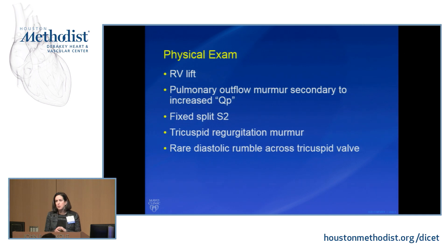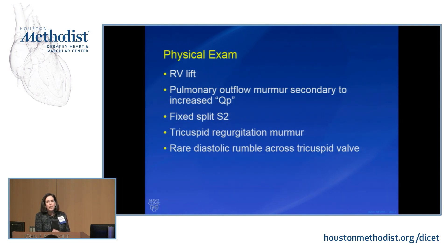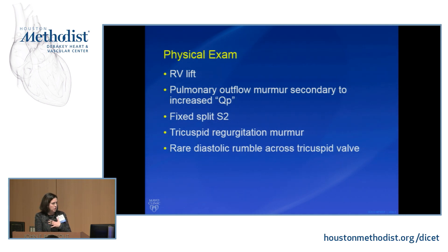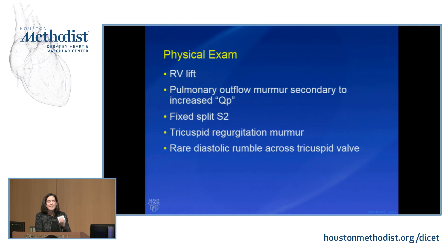The atrial septum is a really complicated embryologic structure and we'll get into all the different types of defects, but in general they all share some common physical exam features. If the RV is volume and/or later could be pressure overloaded, you may feel an RV lift — when you place your hand on the patient's chest you can feel an RV impulse. You can hear a soft systolic murmur because of extra blood going out the lung artery through the pulmonary valve — that's a pulmonary outflow murmur, not the sound of flow across the defect itself.